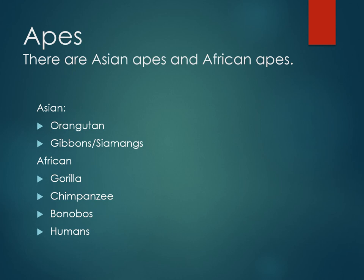Now let's look at the apes. There are two types of apes: Asian apes and African apes. The Asian apes are orangutans, gibbons, and siamangs. The African apes are gorillas, chimpanzees, bonobos, and humans.